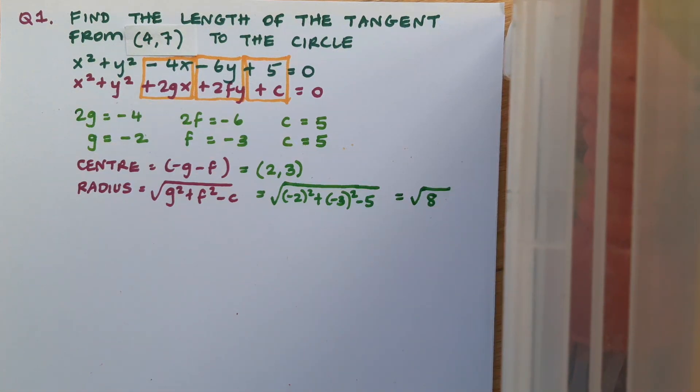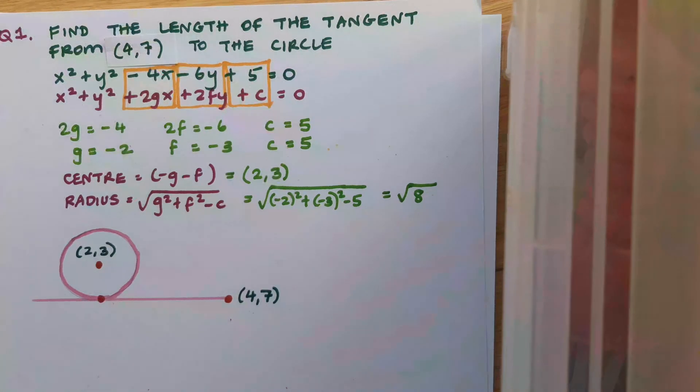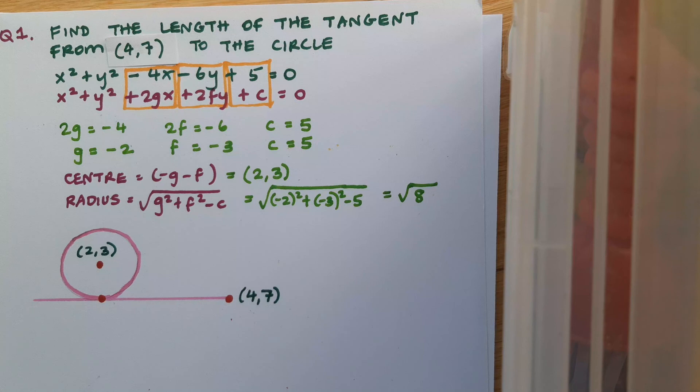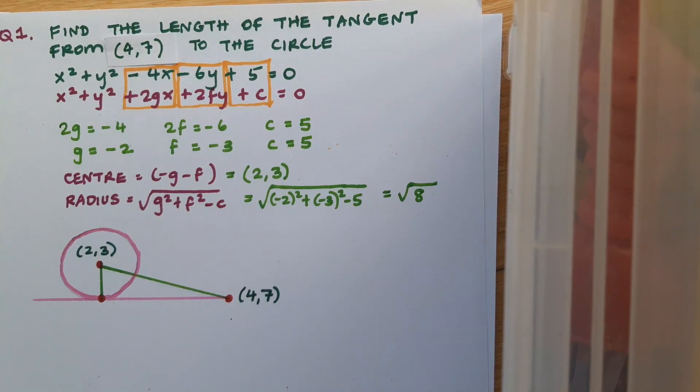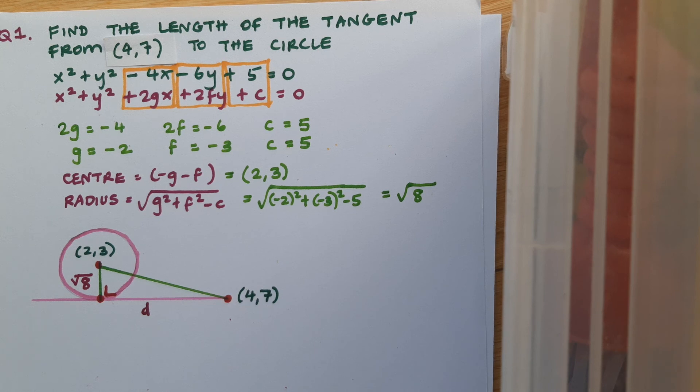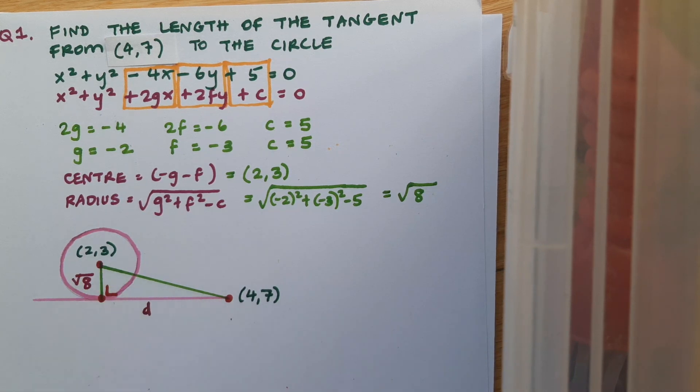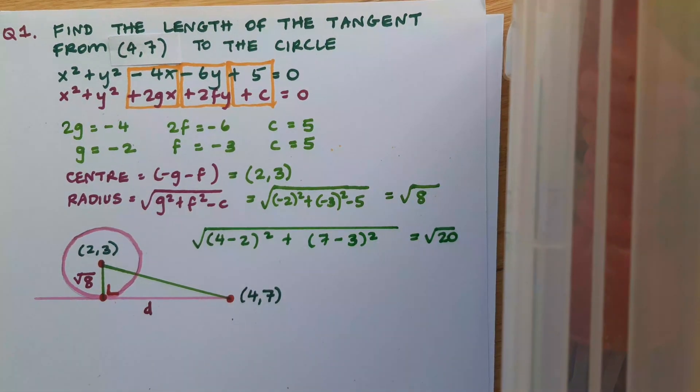So now I'm going to sketch what's happening in the question. So I've sketched my circle and a tangent. Note that this is only a sketch to give me an idea of what I'm working with. So I'll mark in three points: the point (4,7) and the point (2,3) that I know, and the point of tangency that I don't have values for. Now I'll complete my triangle. And of course, I can fill in my radius, which is √8. I'm going to call that required distance that I want to find, D. I'm going to clearly mark in that right angle because the radius is perpendicular to the tangent at the point of tangency. And then we'll use the distance formula to find the distance along the hypotenuse. So I'm filling in that formula and I'm getting √20.